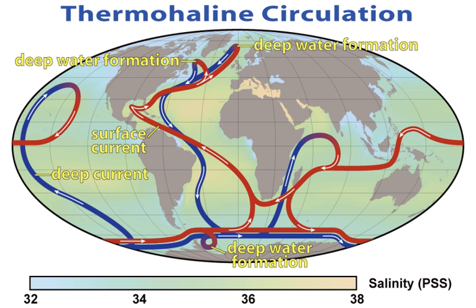Ocean acidification describes the decrease in ocean pH that is caused by anthropogenic carbon dioxide emissions into the atmosphere. Seawater is slightly alkaline and had a pre-industrial pH of about 8.2. Anthropogenic activities have steadily increased the carbon dioxide content of the atmosphere. About 30–40% of the added CO2 is absorbed by the oceans, forming carbonic acid and lowering the pH through ocean acidification. The pH is expected to reach 7.7 by the year 2100. An important element for the skeletons of marine animals is calcium, but calcium carbonate becomes more soluble with pressure, so carbonate shells and skeletons dissolve below the carbonate compensation depth.